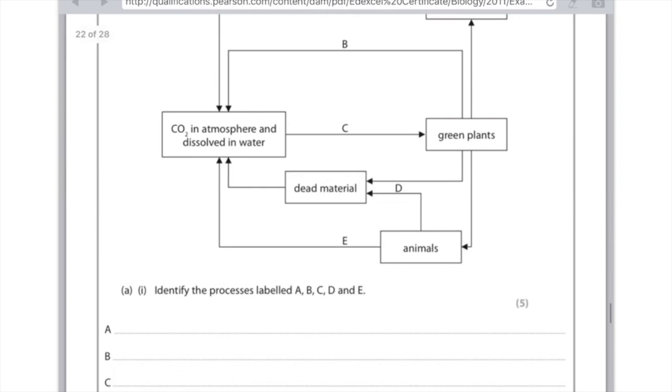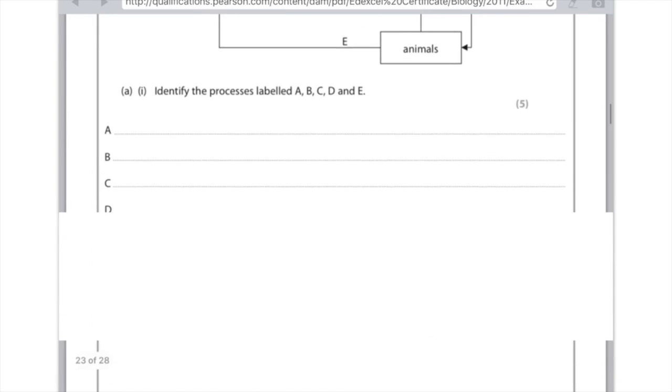And then lastly E. There's an arrow pointing from animals to CO2 in the atmosphere again. That's respiration again. So not so bad.